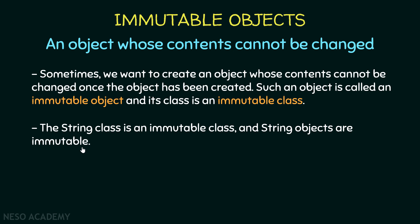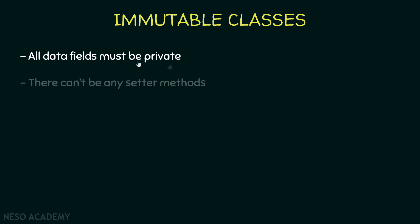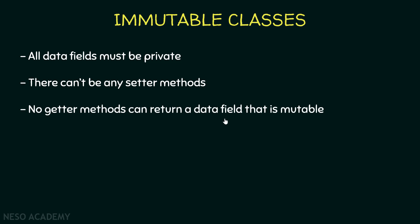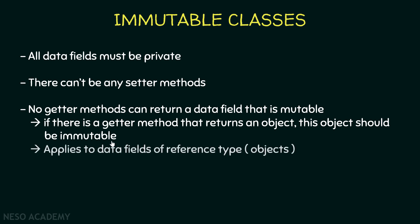Let's talk about immutable classes. How can we say that a class is an immutable class? First, all data fields must be private. Also, there cannot be any setter methods in this class. Finally, no getter methods can return a data field that is mutable. A mutable object is an object whose content can be changed. So if there is a getter method that returns an object, that object should be immutable. This third rule applies to data fields of reference types.